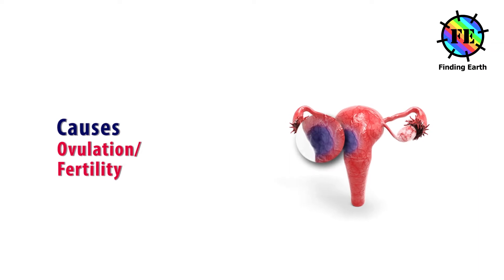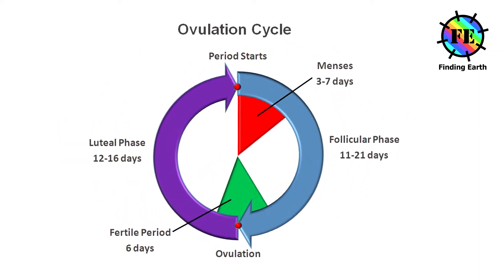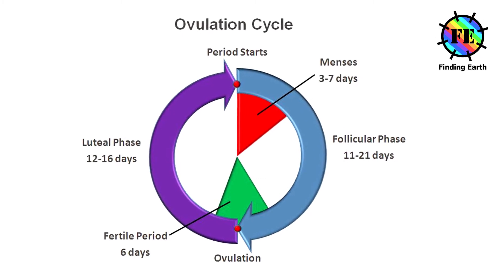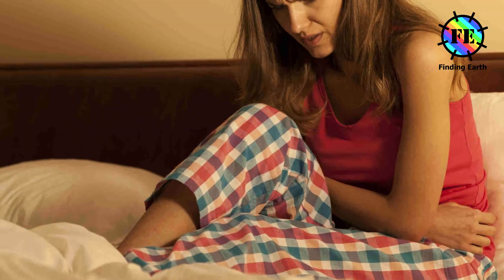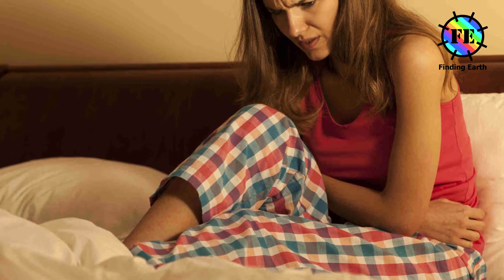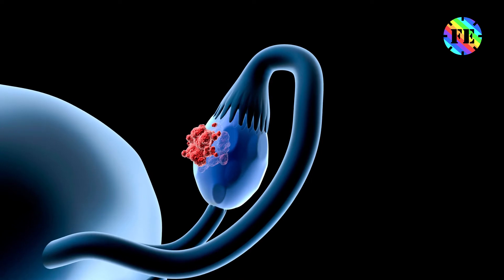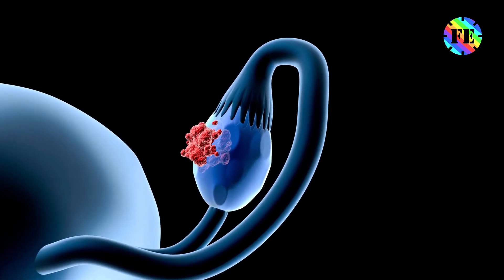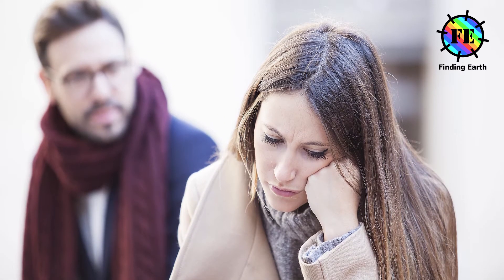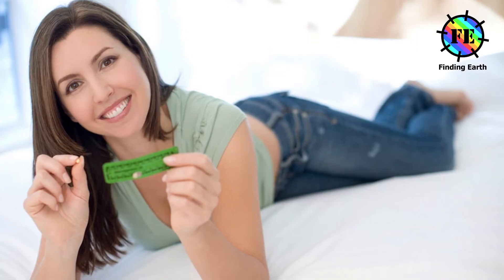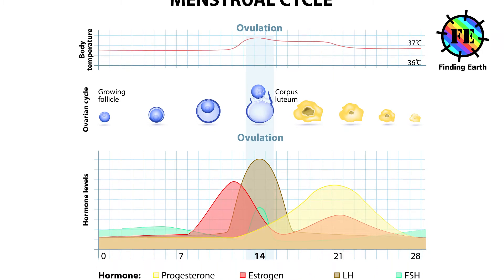Ovulation and fertility: Every time an egg is released into the reproductive system, the surface of the ovary breaks. To let it out, the ovary is damaged and needs to be repaired. Each time, there is a greater chance of abnormal cell growth during the repair. Chances of ovarian cancer increase for the following reasons: never having been pregnant, never having taken the contraceptive pill, early start of menstruation, and late start of menopause.